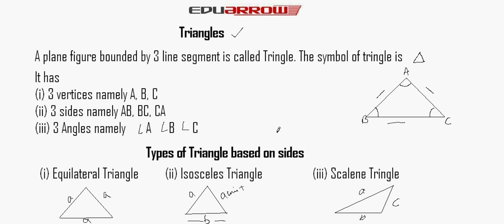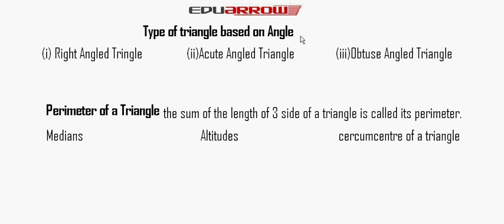Now we read the types of triangle based on its angle. Right angle triangle. A right angle triangle is a triangle whose one angle measures 90 degrees. So it is called the right angle triangle.